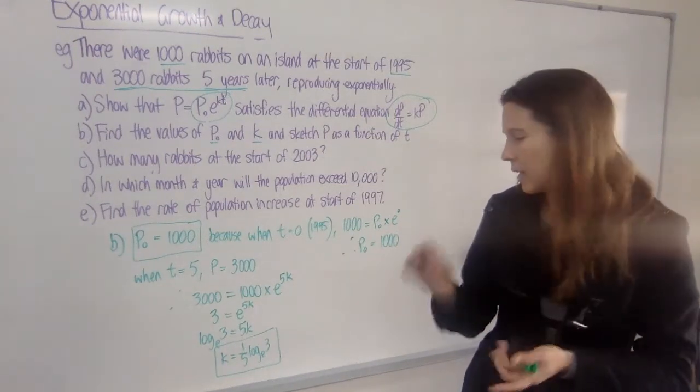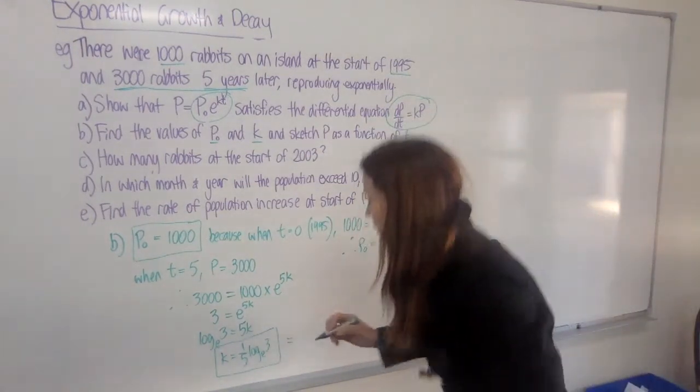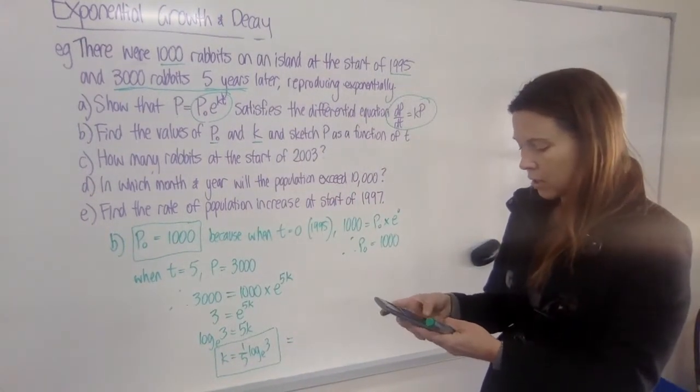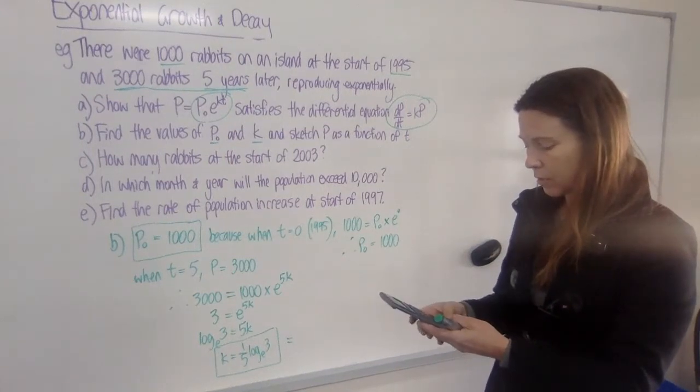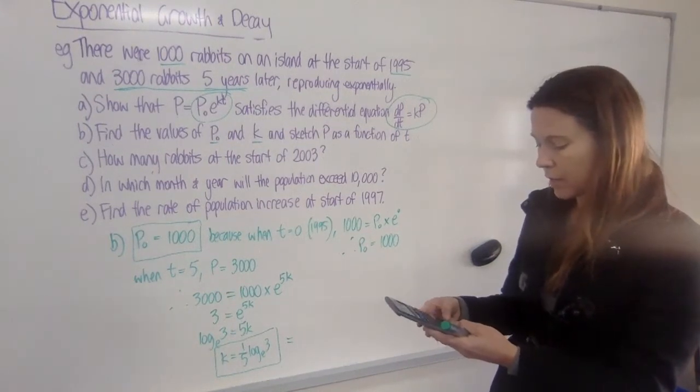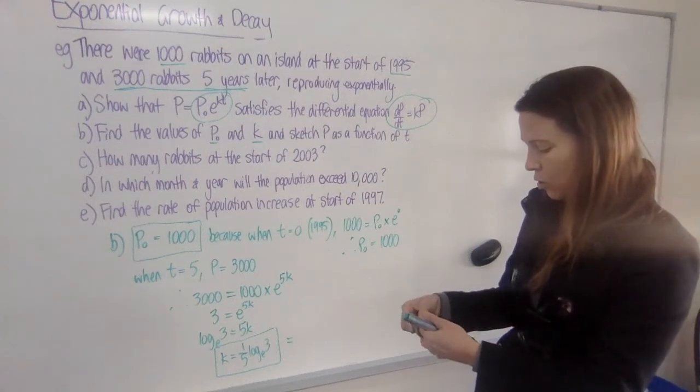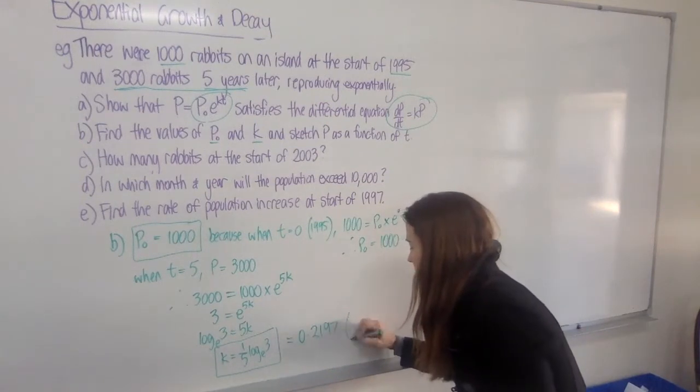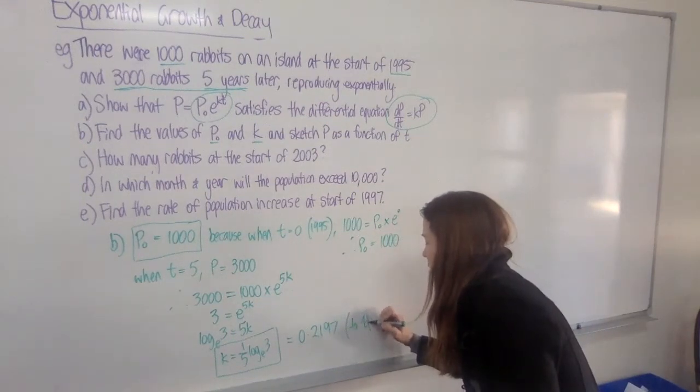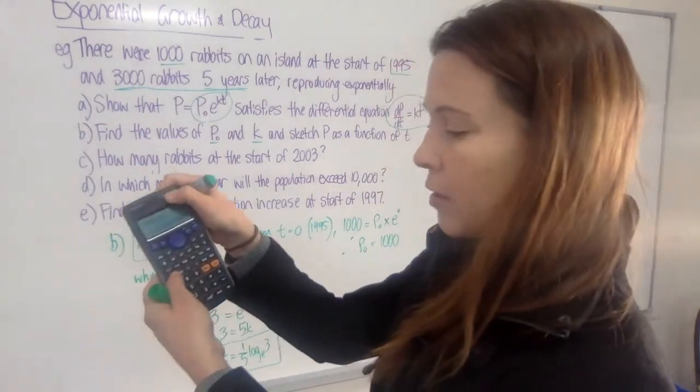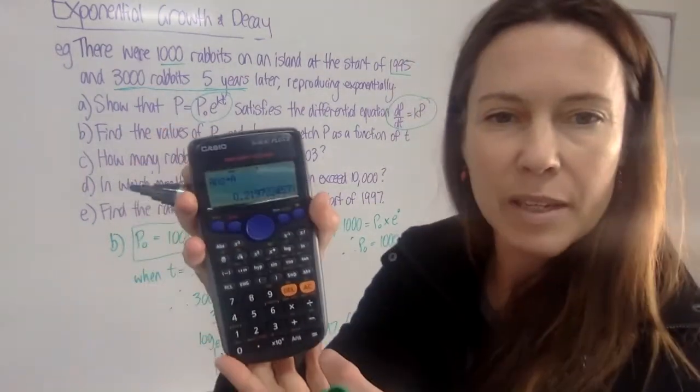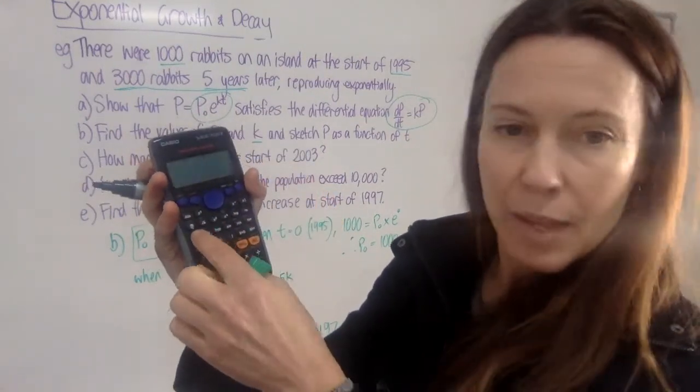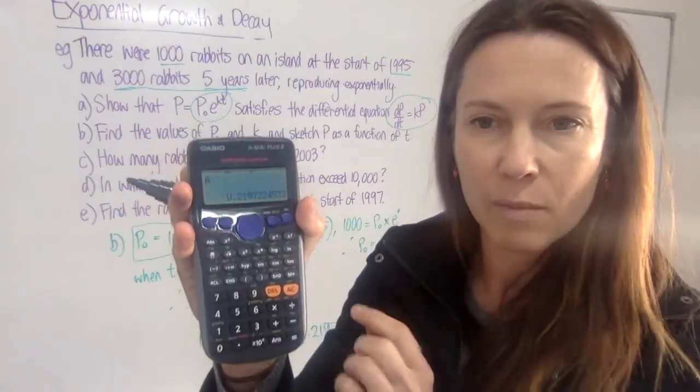Now at this point, I would put k into my calculator. I'd potentially even write down a rough value for this so that I know what I'm working with. So if I've got 0.2 times the natural log of 3, then I get 0.2197, et cetera. Let's say to four decimal places. But I now put shift, store, A. And now that number says answer equals A. Later when I want to use A, I can hit alpha A. And that number will come straight back up again.